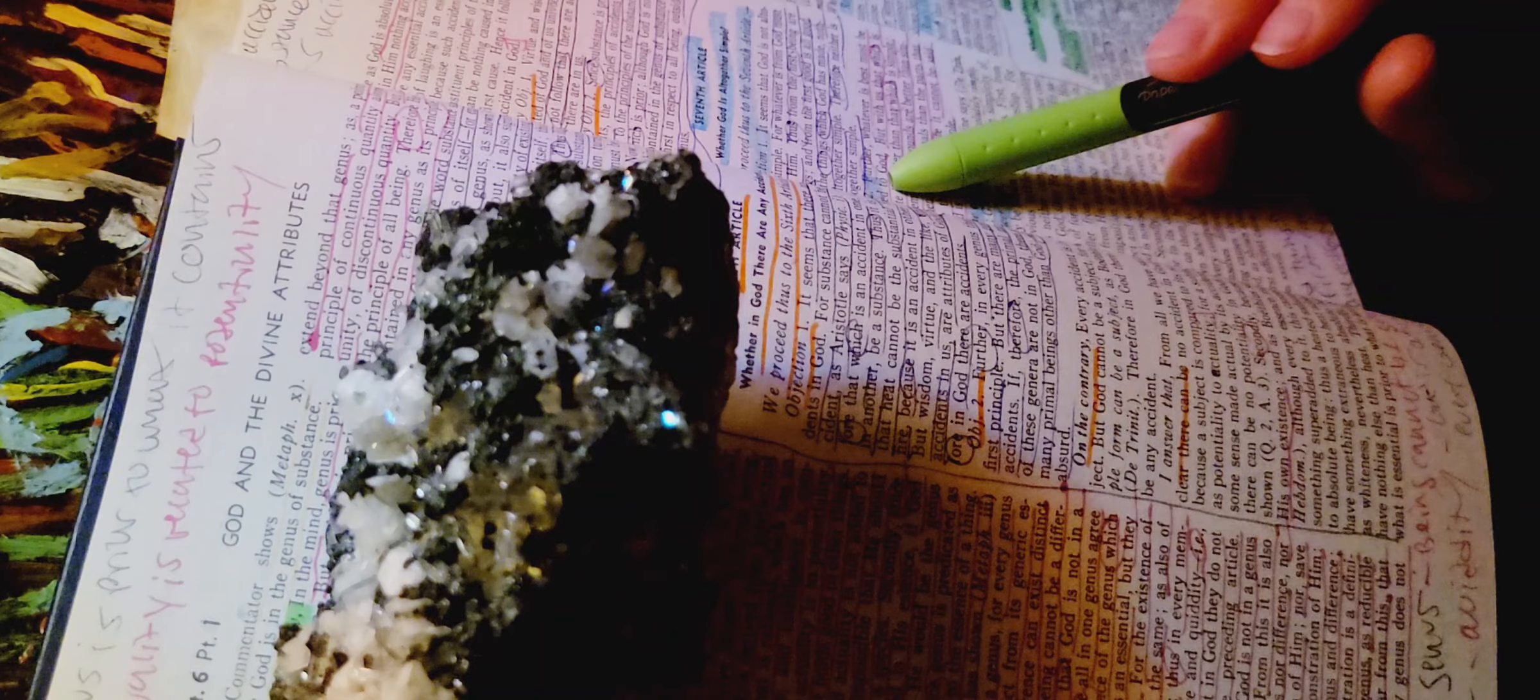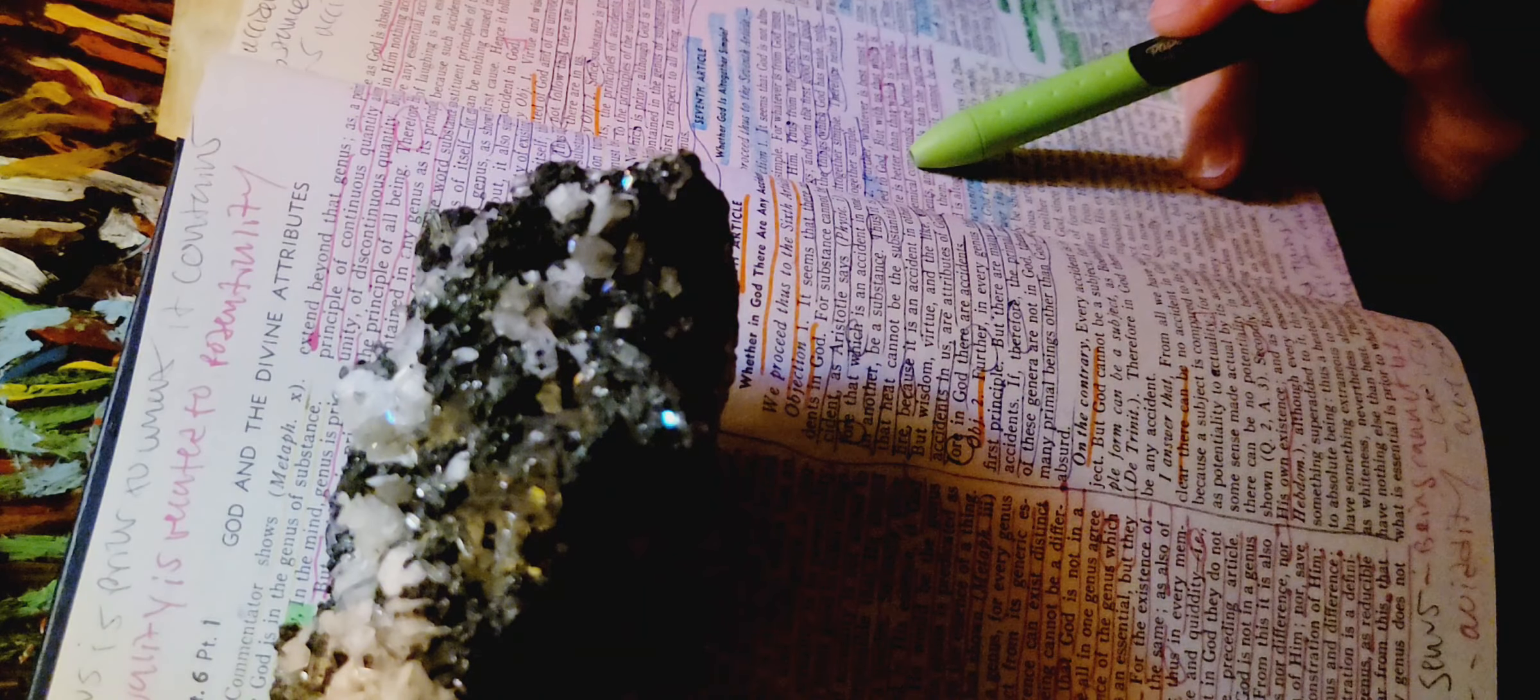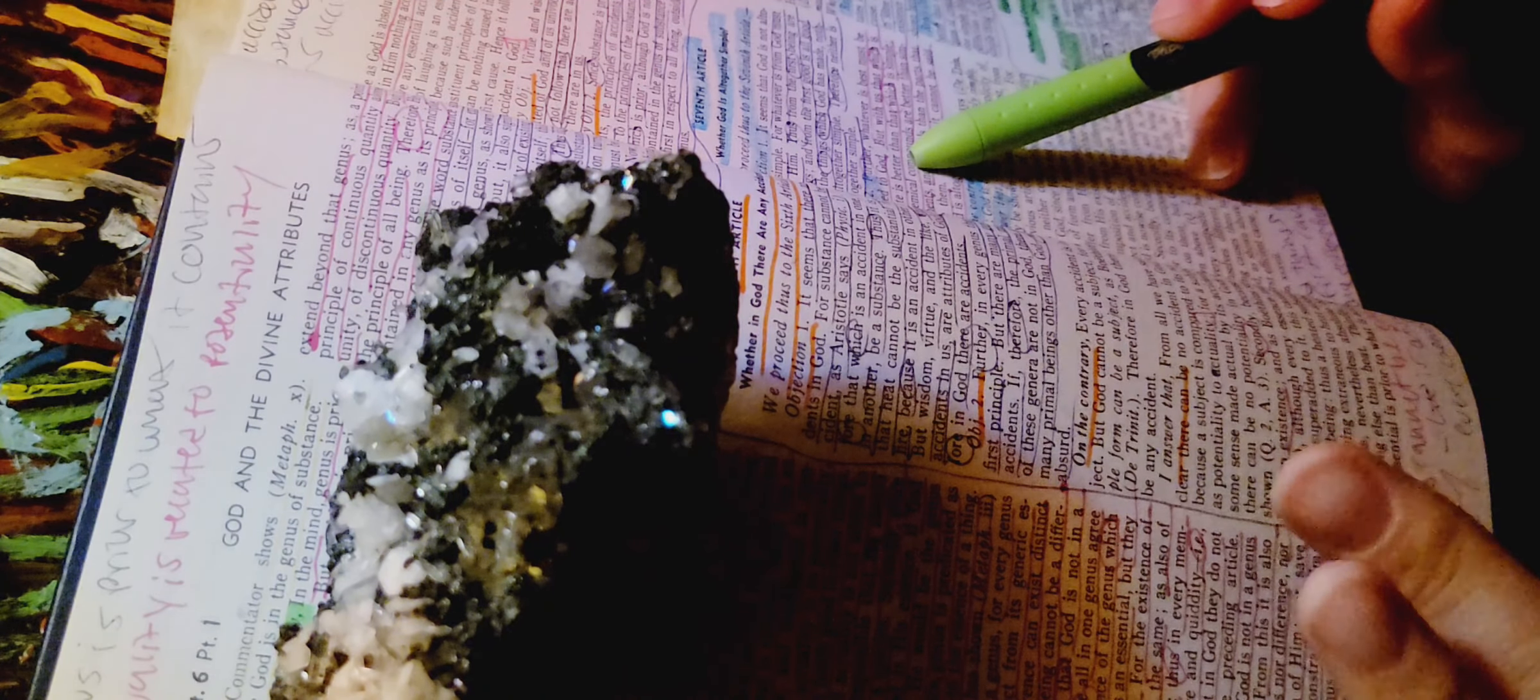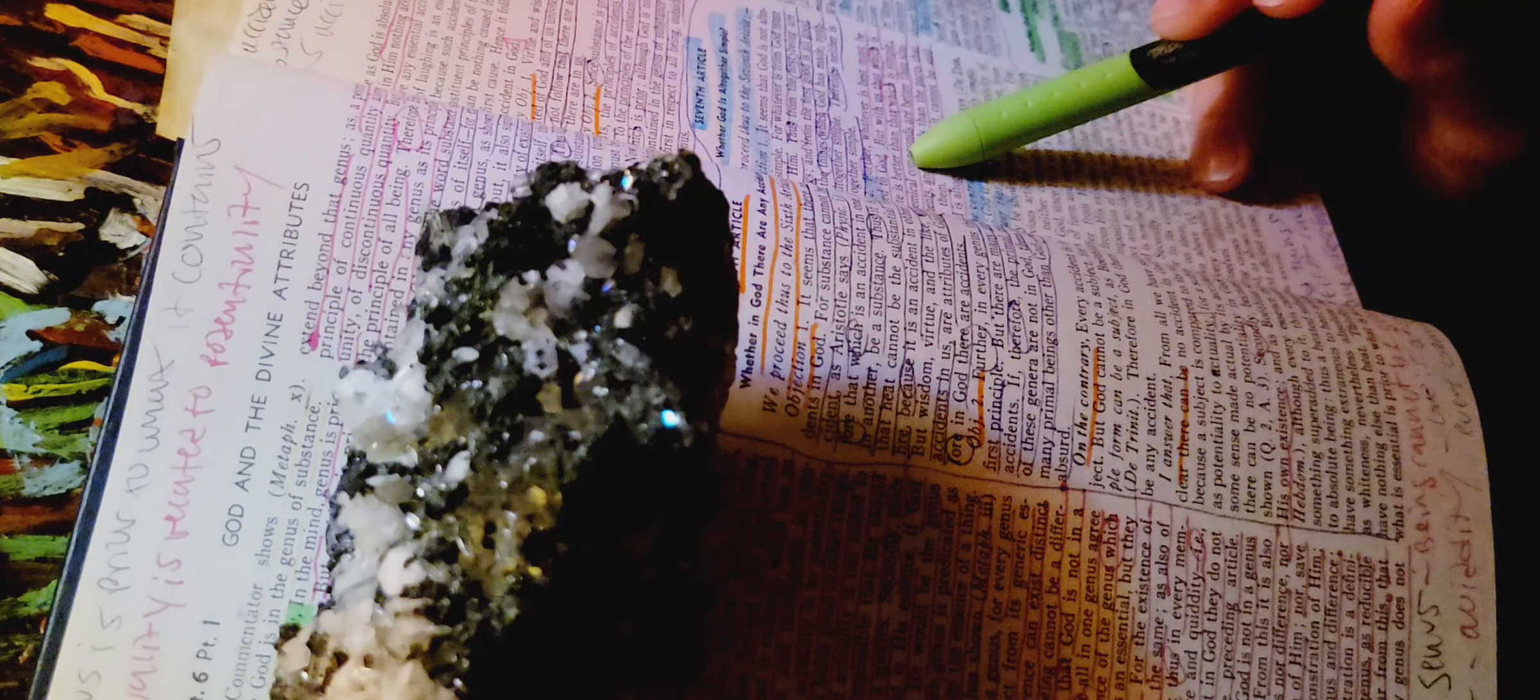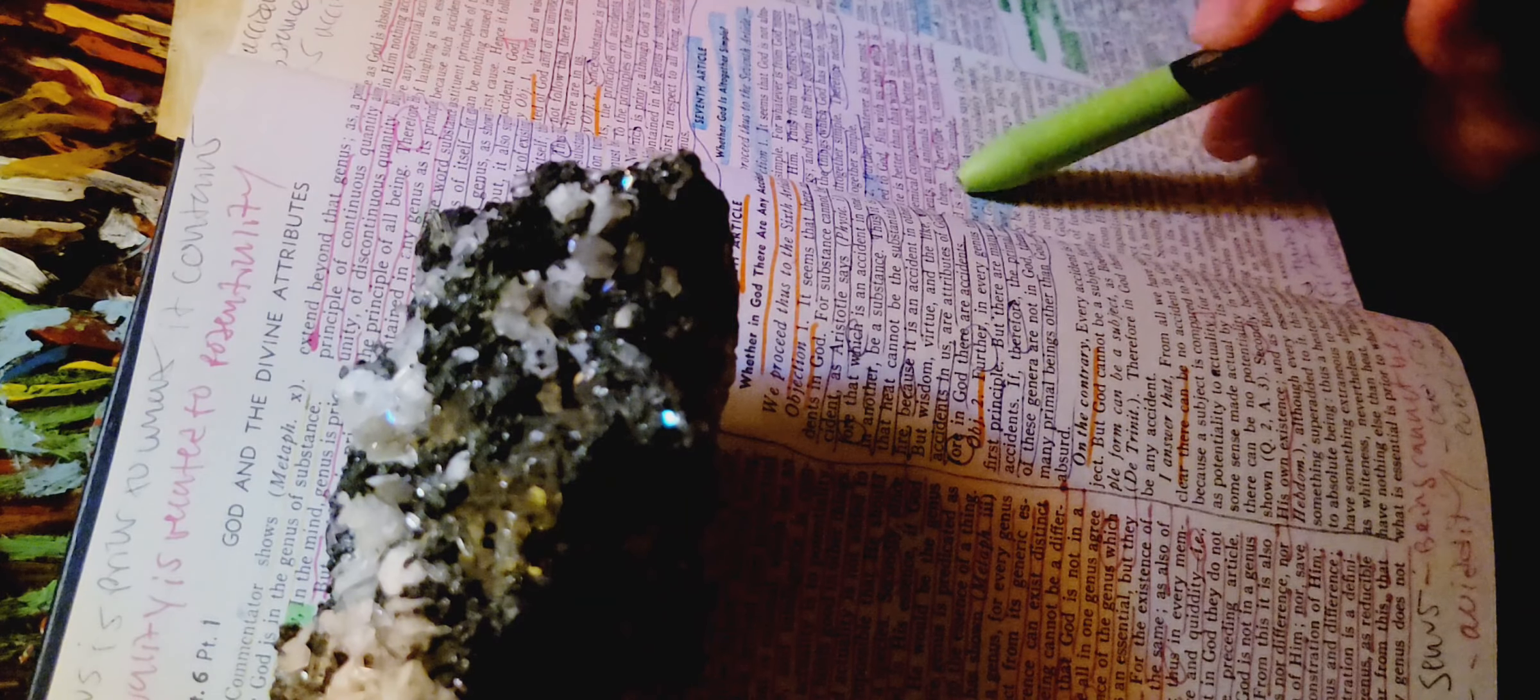Objection 2. Further, whatever is best must be attributed to God. But with us, that which is composite is better than that which is simple. Thus, chemical compounds are better than simple elements, and animals than the parts that compose them. And therefore, it cannot be said that God is altogether simple.